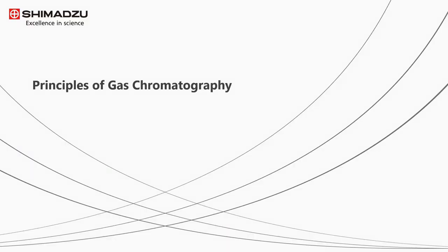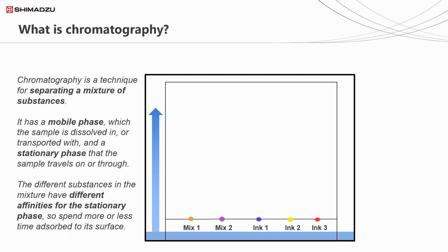Moving on to the start of the technical content for this lecture, I'm going to start by asking the most important question: what is chromatography? If you were to look this up in a textbook, chromatography is defined as the relative separation of substances based on their affinity to a mobile and stationary phase. In layman's terms, chromatography is about separating a mixture of substances. Whether it be pharmaceuticals, cosmetics, food, or cleaning products - these are all mixtures of chemicals, and in order to analyze them, we need to separate them out so we can look at each one individually.